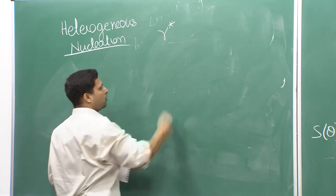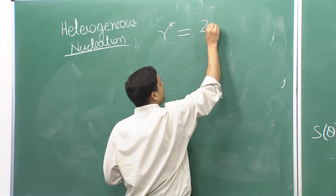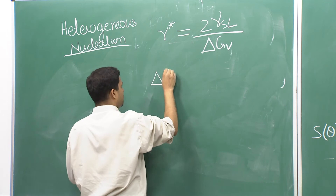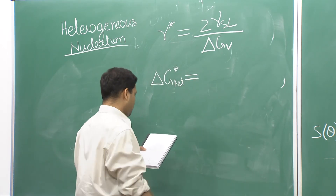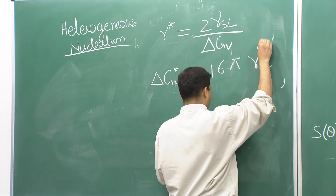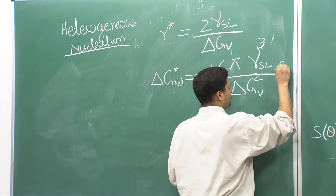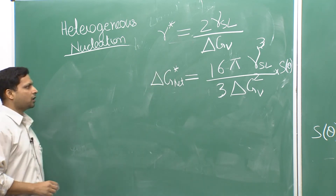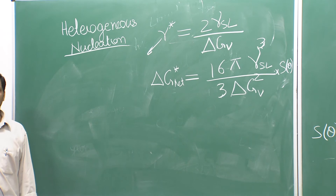Without going into the full mathematics, the final values are: r* for heterogeneous nucleation is the same as r* = 2γ_SL / ΔG_V, exactly the same as for homogeneous nucleation. Similarly, ΔG* for heterogeneous is obtained. These are the critical values. What we see is that r* is exactly the same as for homogeneous nucleation.